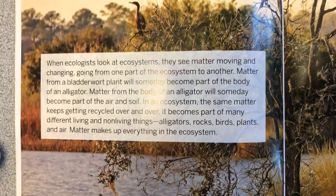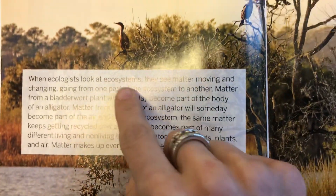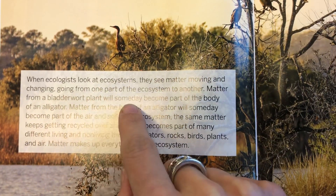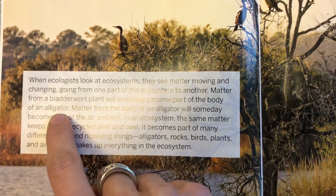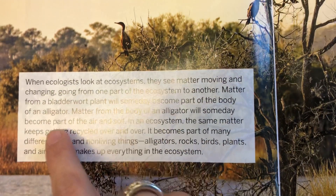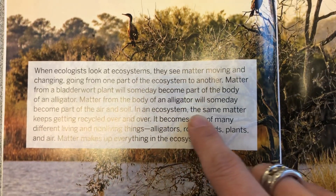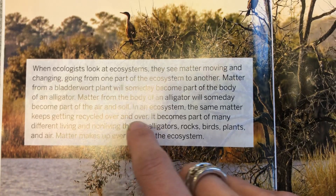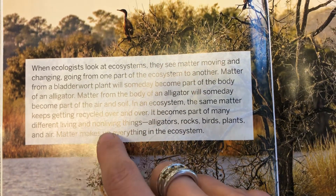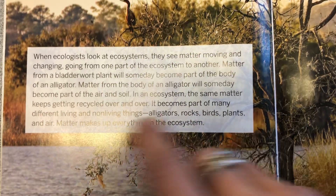When ecologists look at ecosystems, they see matter moving and changing, going from one part of the ecosystem to another. Matter from a bladderwort plant will someday become part of the body of an alligator. Matter from the body of an alligator will someday become part of the air and soil. In an ecosystem, the same matter keeps getting recycled over and over, becoming part of many different living and non-living things — alligators, rocks, birds, plants, and air.